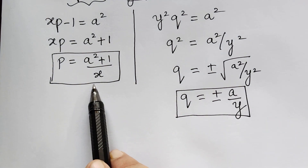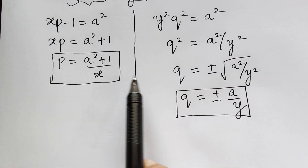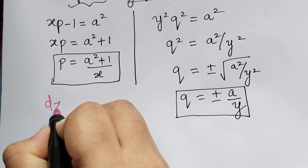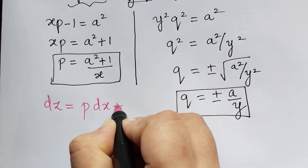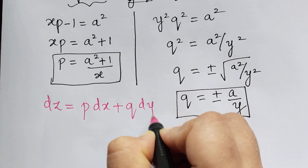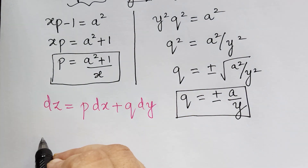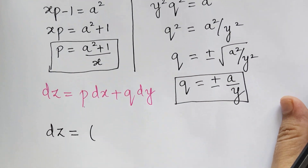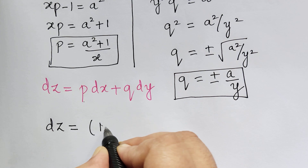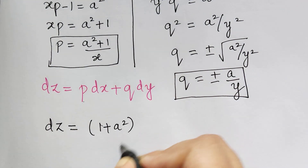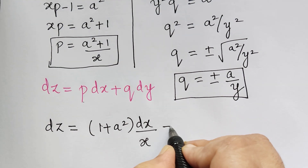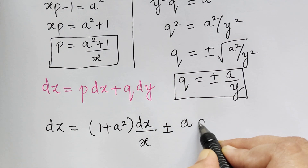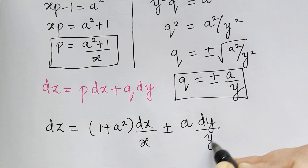Now we have the value of p and we also have the value of q. These two have to be substituted in the equation dz equals p dx plus q dy. So, dz will be equal to 1 plus a squared divided by x, times dx by x, plus or minus a into dy divided by y.